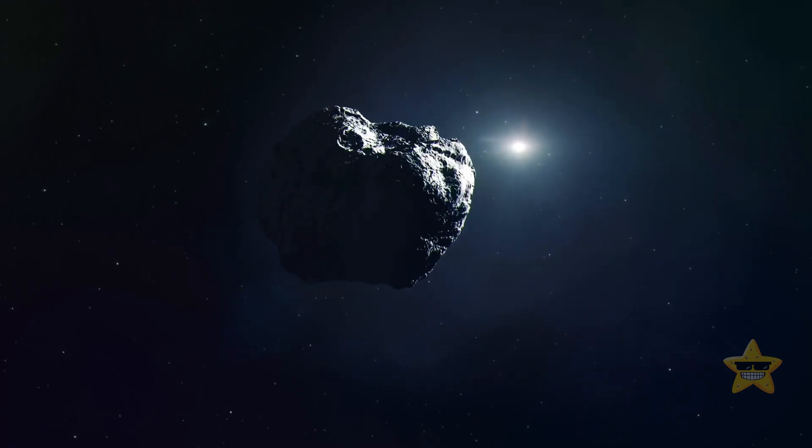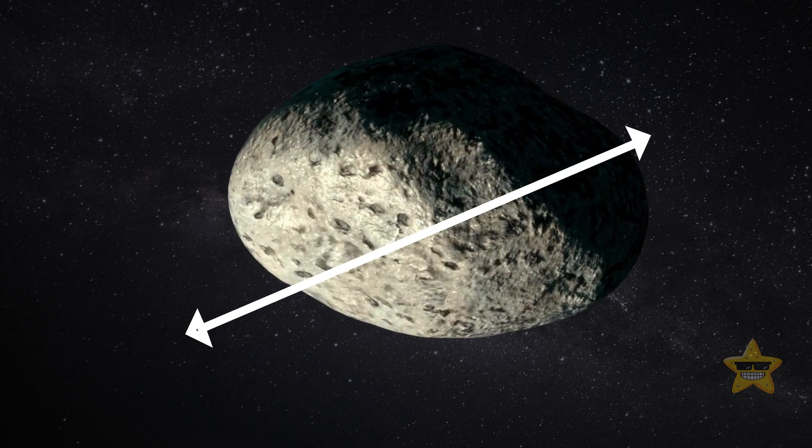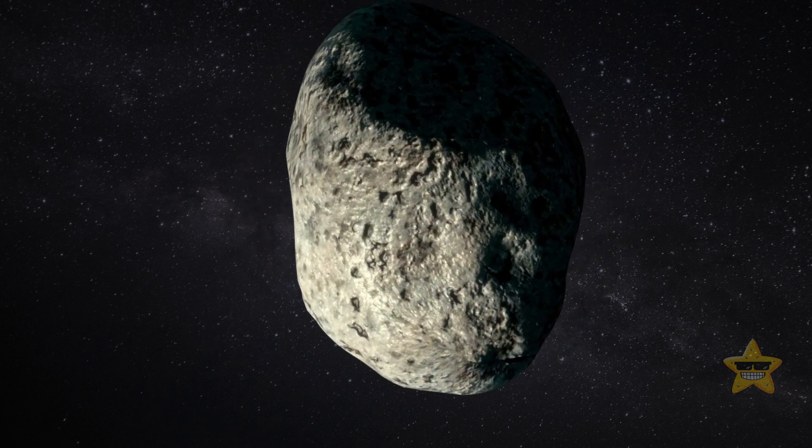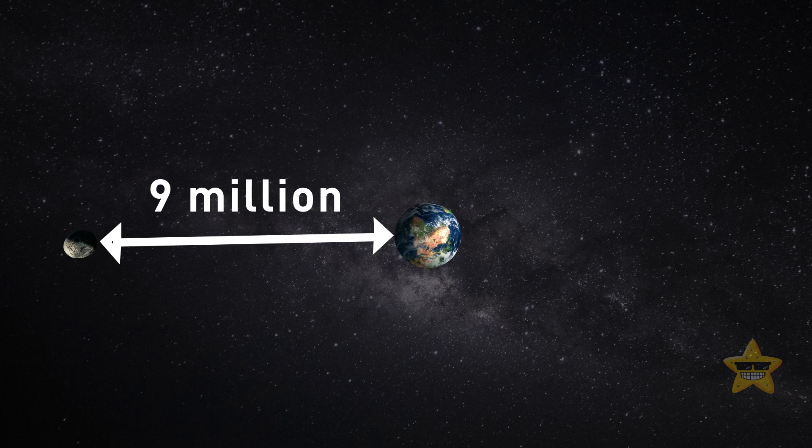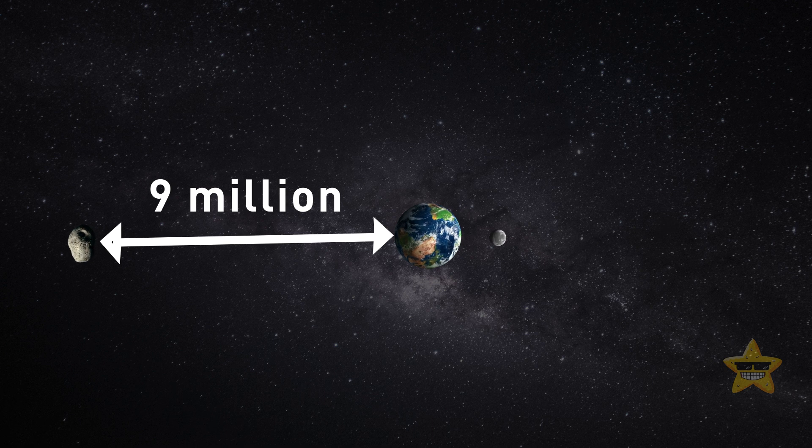The newly found space object is a mere 50 feet across and is floating 9 million miles away when it's the closest to Earth. This distance is around 35 times as great as that between our planet and the moon.